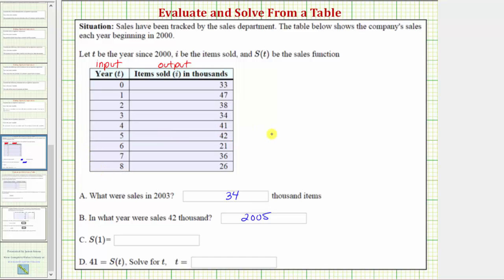Part c asks us to determine the function value s of one. Using function notation, s of one tells us the function input, or in our case the value of t equals one. So now we look for a one in the first column, which occurs here.